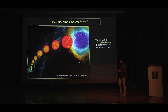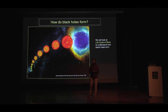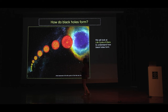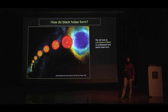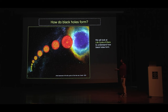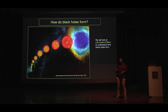Now that we know something about black holes — how they were discovered and what they are — we want to learn how they form. You may have heard that black holes are the end products of stellar evolution and they form when stars die. But not all stars will become black holes. So which stars become a black hole, and how do we know that and why does that happen? To know the answers, we need to know the life cycle of a star — how stars are born, grow up, and then die.